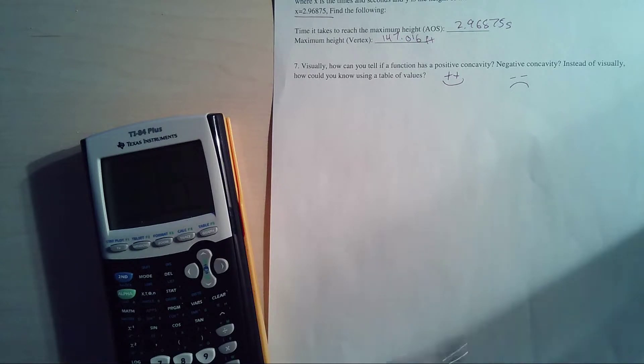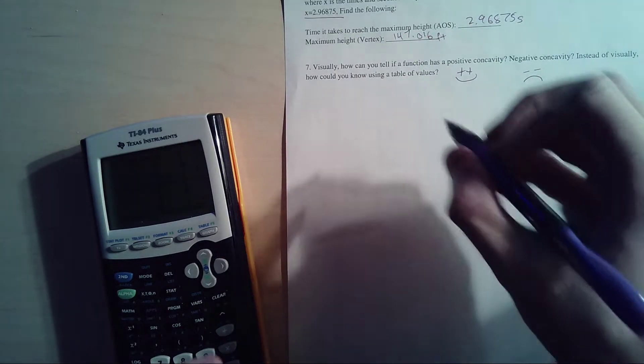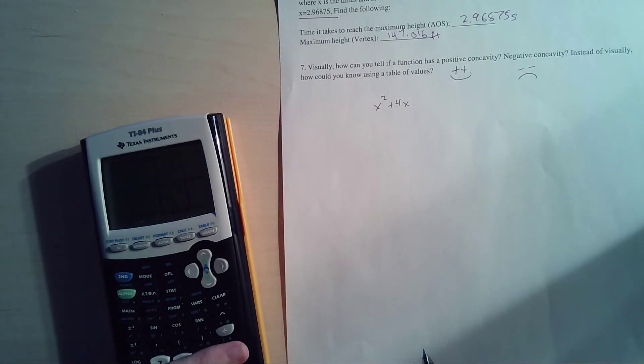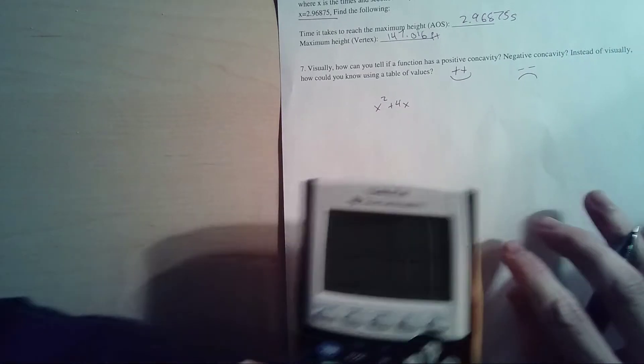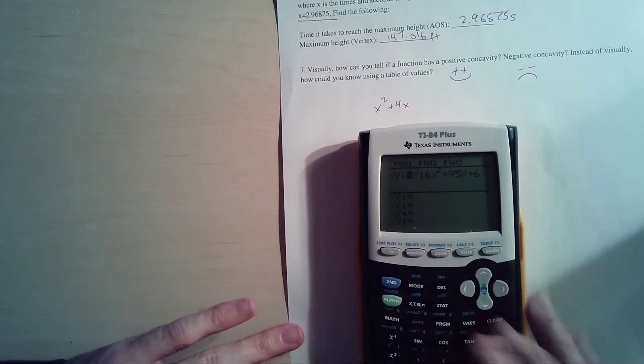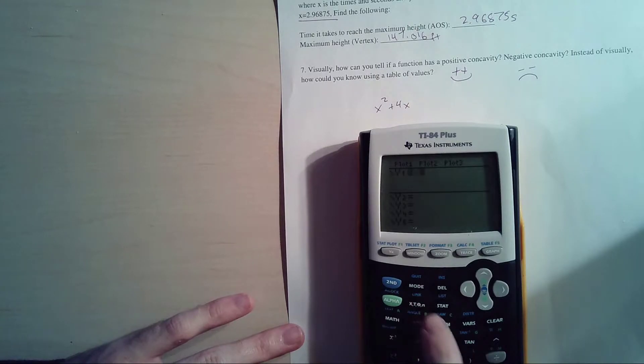Well, why don't we make a table of values really quick for a quadratic function? Let's pick an easy one. Let's do x² + 4x. Let's make a table of values for this. Let's cheat and use the calculator too while we're at it. So we're trying to make a table of values, so x² + 4x.